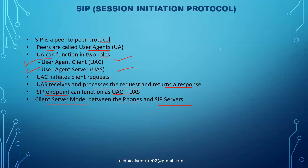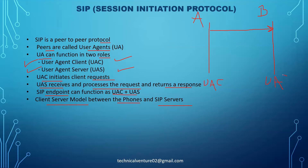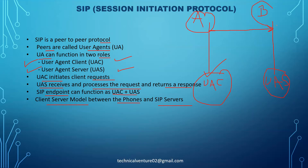Let's discuss UAC and UAS with an example. Suppose you have two phones — Phone A and Phone B. If Phone A is initiating a request and sending an invite message to Phone B, then Phone A acts as a User Agent Client and Phone B acts as a User Agent Server. Whoever initiates the request acts as a UAC. The UAS will receive the request, process it, and return a response.